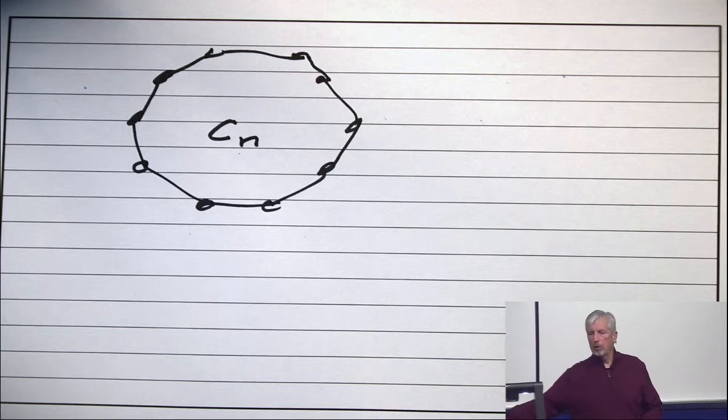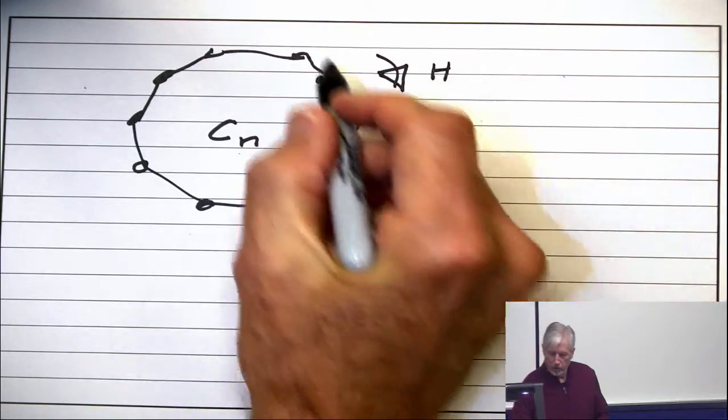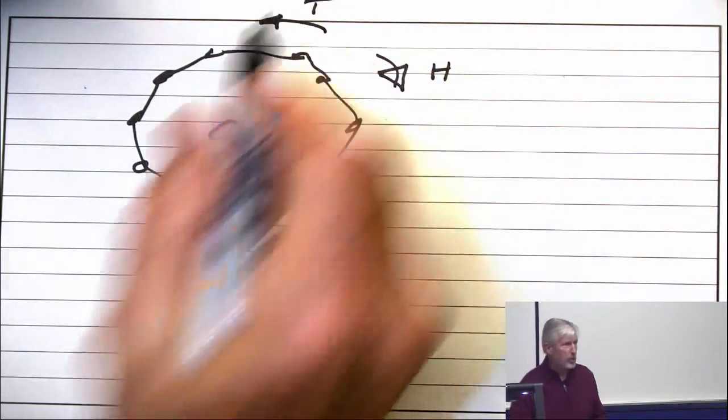Flip a coin. If it's heads, you move clockwise. If it's tails, you move counterclockwise. One step.